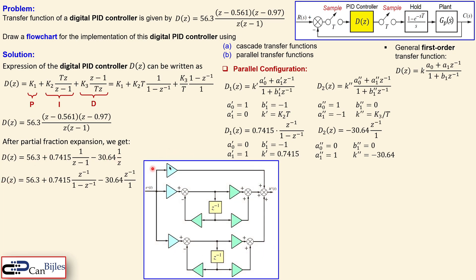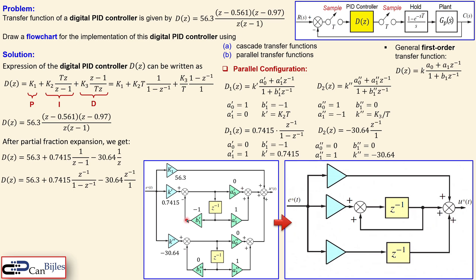Using the same parallel flowchart from the previous slide, we now apply the parameters from d1 and d2 and also k1. The values for our digital controller are inserted, including k1 equal to 56.3. Again we see zeros, ones, and minus ones, allowing further simplification. The result shows k1, k-prime, and k-double-prime with the two delay elements, with zero coefficients removed, negative feedbacks converted to positive, and the final simplified parallel configuration obtained.